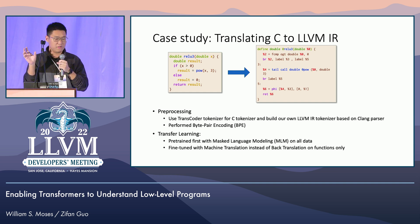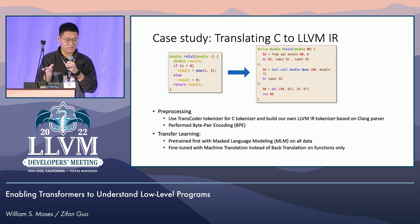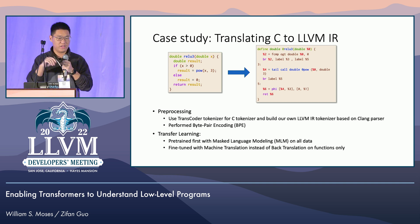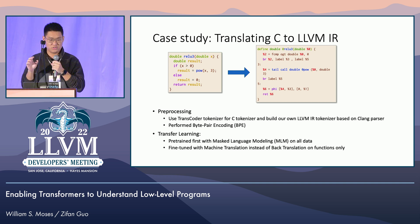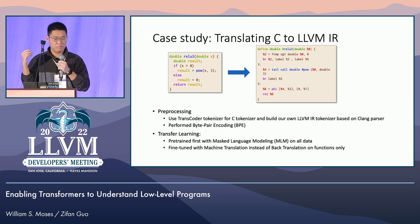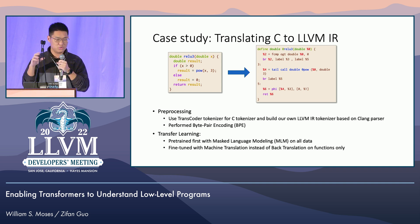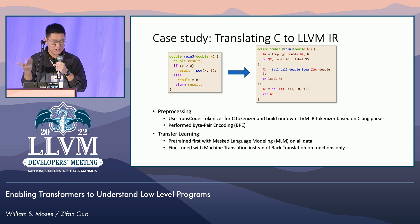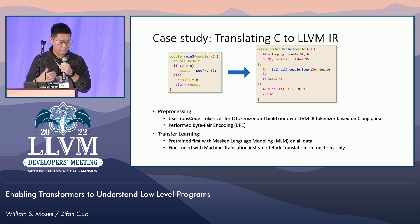In the natural language sense, say you have the word 'movement' — probably 'move' and 'ment' appear separately more frequently than 'movement' together, so you split them up into two words. That's how byte-pair encoding works.